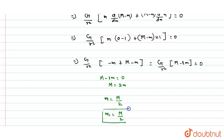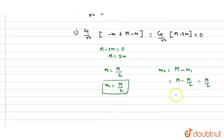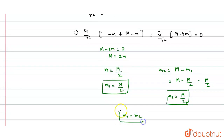For the value of M2: M2 equals capital M minus M1, which is M minus M/2, giving M2 equals M by 2. Therefore the relation between the two masses is M1 equals M2. This is the required relation between M1 and M2. I hope you understood. Thank you.